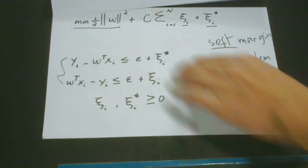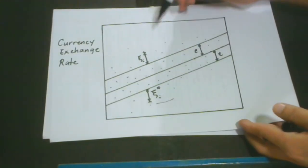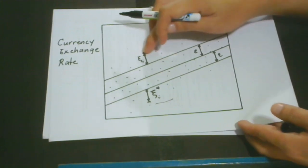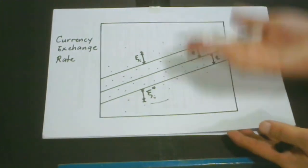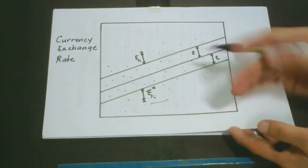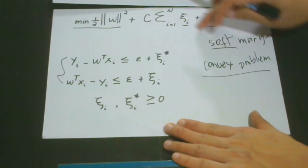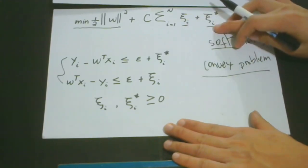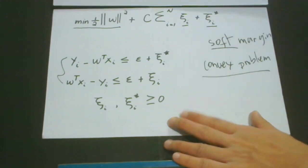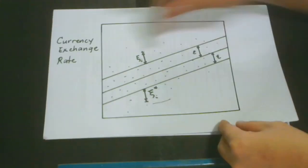I think this one is very much made clear. The function of our slack variables is that they determine how many points we can tolerate outside our region.